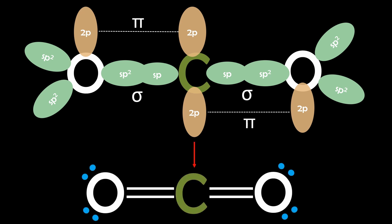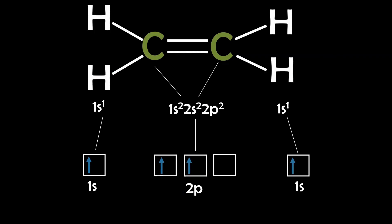And this arrangement results in a symmetrical linear carbon dioxide molecule that is stable. So let's look at another example, ethylene.